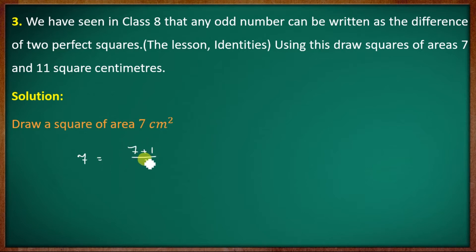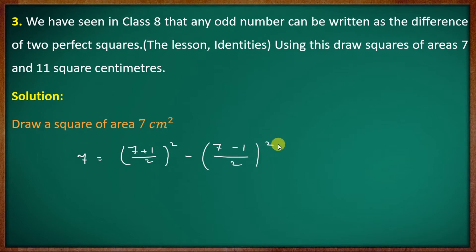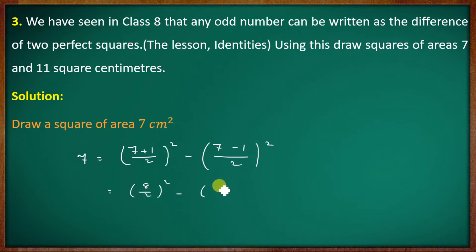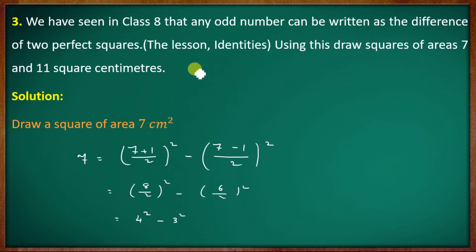We use the formula: 7 equals (7 plus 1) divided by 2, all squared, minus (7 minus 1) divided by 2, all squared. That gives us 4 squared minus 3 squared, which is 16 minus 9, equal to 7. Okay.